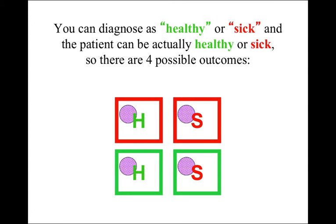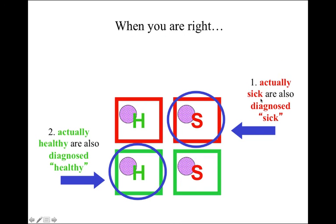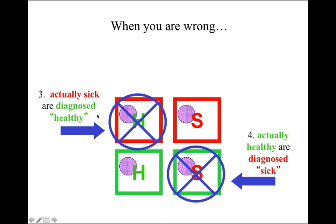You can diagnose healthy or sick, and the patient can actually be healthy or sick, so there are four possible outcomes. When you diagnose sick and the patient is actually sick, you're correct. You're also correct when you diagnose healthy and the patient is actually healthy. But you can also be wrong in two ways: the person could actually be sick but you diagnose them as healthy, or you diagnose them as sick and they are actually healthy. So this is where you're wrong — the person is actually sick but you diagnose healthy, or the person is actually healthy and you diagnose sick.